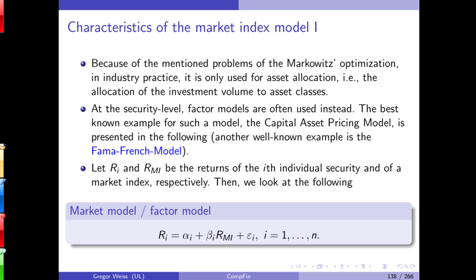Capital asset pricing model. Portfolio theory by Markowitz is regularly used for asset allocation — optimizing between asset classes like stocks, bonds, and real estate — where portfolio weights don't change too much. But for individual security selection, factor models are used. The most basic factor model is the capital asset pricing model, and there have been many extensions and generalizations — for example Fama-French and Fama-French-Carhart — which are all part of the field of asset pricing.